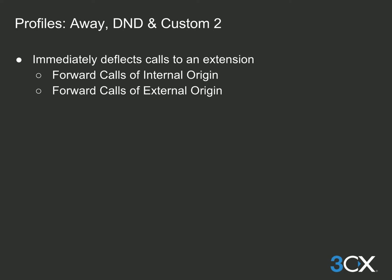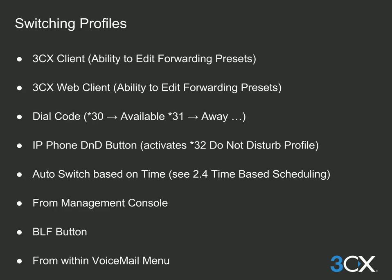You will have the option to forward calls of internal and external origin differently. There are a variety of ways to change an extension's profile. The first and easiest is to use a 3CX client, where a simple drop-down box allows you to select the forwarding profile and configure forwarding rules directly from the client without needing to log in to the management console. You can also change the profile state and edit forwarding presets from the 3CX web client. Dial codes from any provisioned extension can also change status — the dial code is star 3 by default.